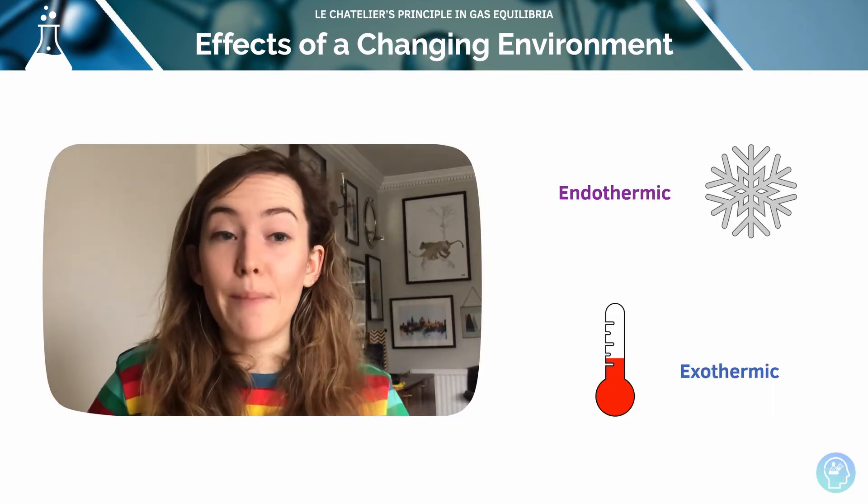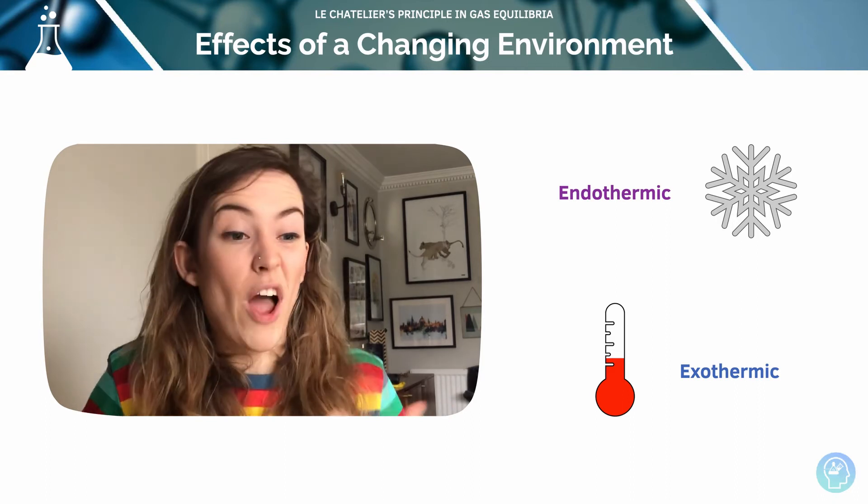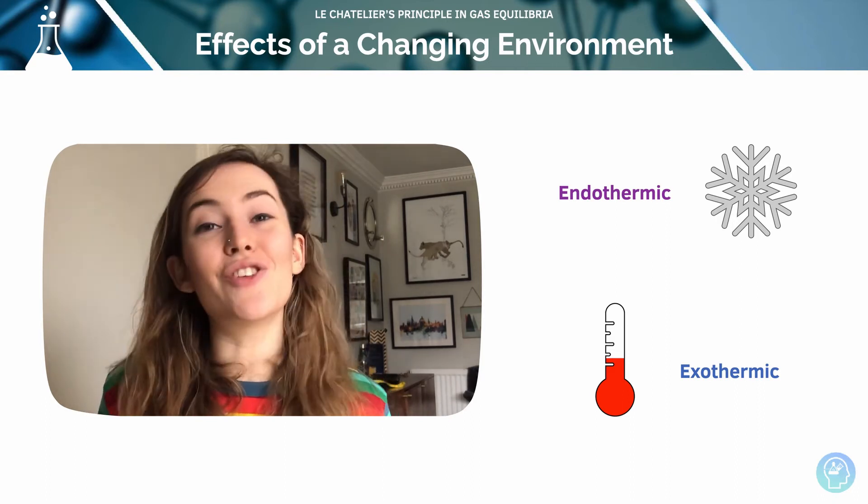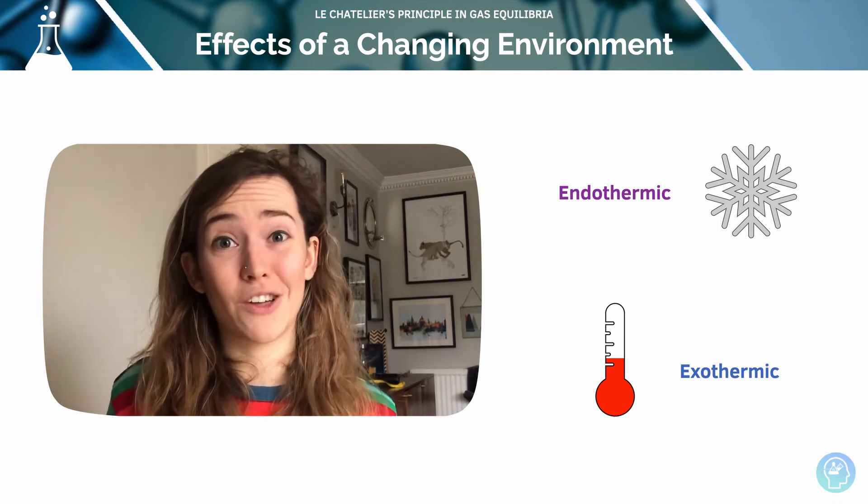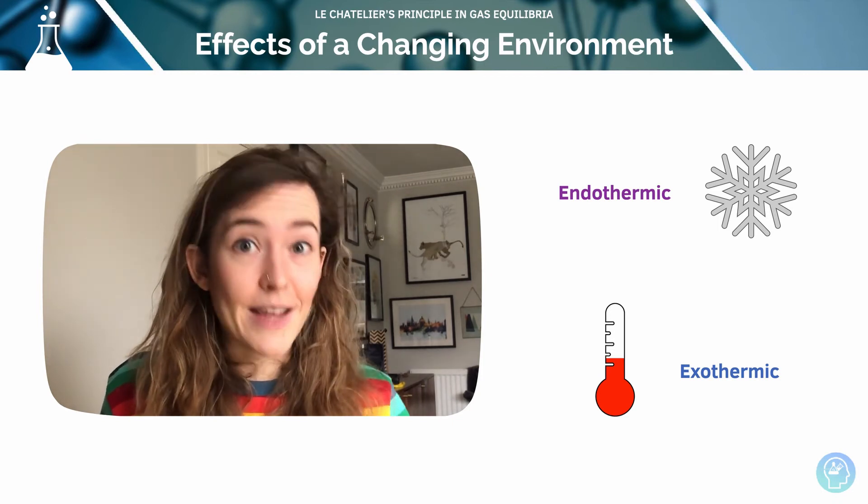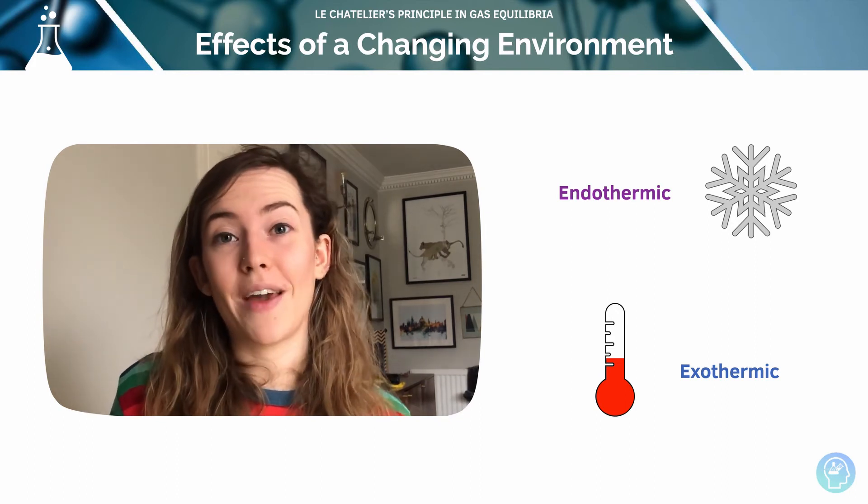If we're thinking in terms of temperature, if we increase the temperature, the system is going to get quite hot. The equilibrium is going to shift in the endothermic direction. And I like to think about it as it's trying to cool itself down and oppose that change. Conversely, if we decrease the temperature, it's going to want to shift in favor of the exothermic direction.